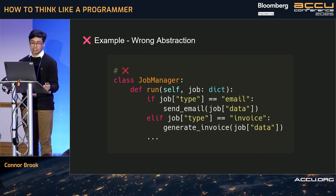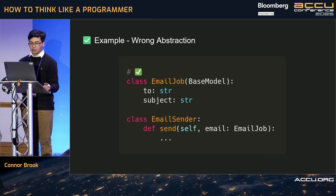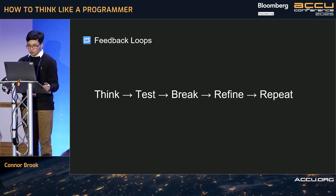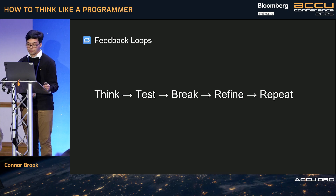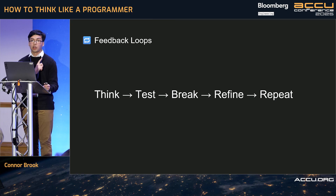On wrong abstraction: we have a job manager where we have different job types like an email or an invoice. Or potentially we just have an email job, an email sender. It's all about feedback loops. Skill compounds through iteration. This is the cognitive loop you follow whenever you program: think, test, break, refine. It's not just software, it's cognitive. It applies to everything. You're not just fixing bugs in your code — you're refining your own understanding of the problem space. And every time you complete the loop, you get sharper.